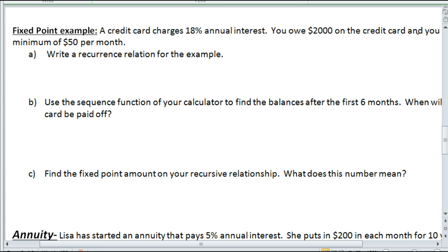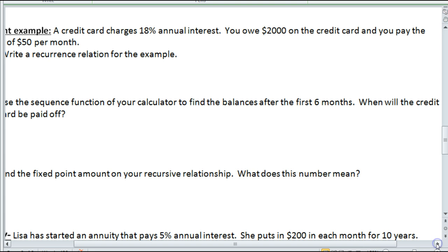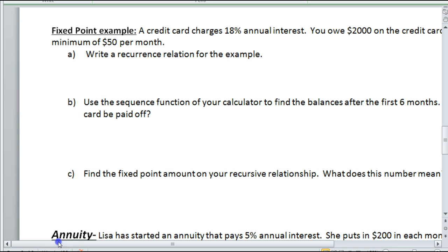You're going to pay the minimum $50 per month. So we want to write a recurrence relationship for this. What that means now is that my now is equal to my previous. They're going to charge me 18% interest on the amount I owe, and then I'm going to pay off $50 of it.